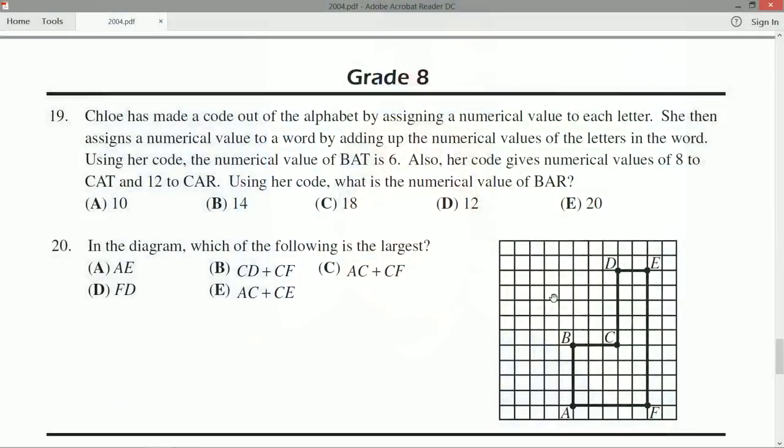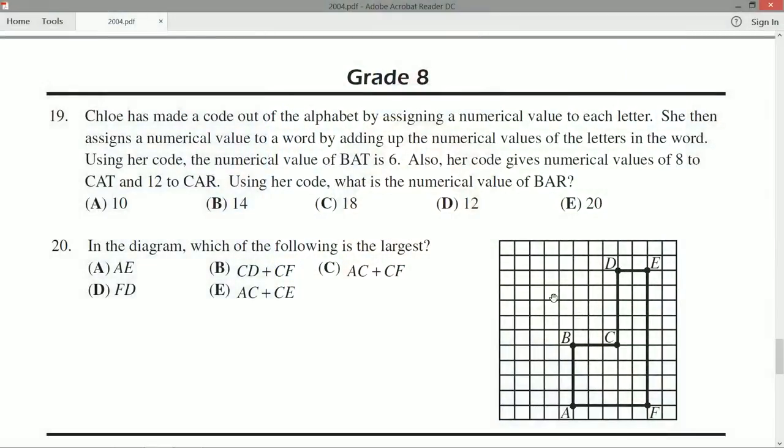So, question number 19, what have you got to offer for us? Chloe has made a code out of the alphabet by assigning a numerical value to each letter. She then assigns a numerical value to a word by adding up the values of the letters in the word. Using her code, the numerical value of bat is 6. Also, her code gives numerical values of 8 to cat and 12 to car. Using her code, what is the numerical value of bar?